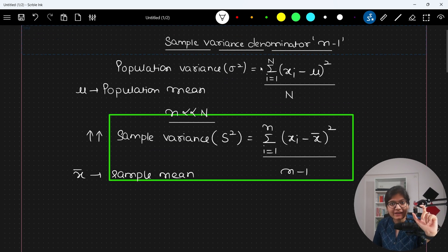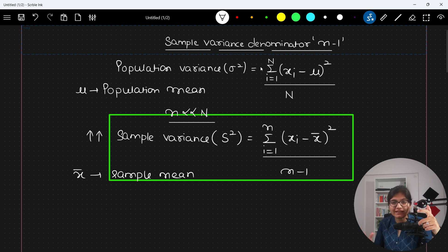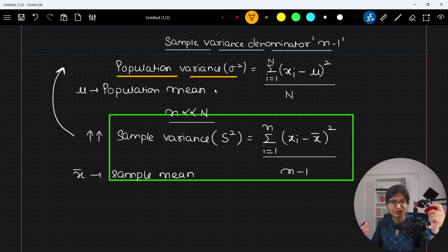So this is something which we called in mathematical term as an unbiased estimator. So when I divide the value by N minus 1, I will be able to get a value which is approximately equal to population variance.